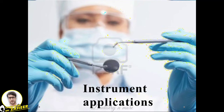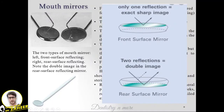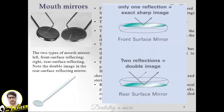Mouth mirrors: there are basically two types. The first one is the front surface reflecting and the second one is rear surface reflecting. The basic difference between these two is that the rear surface reflecting shows a double image, as you can see in the picture here. The front surface image appears to be on the surface of the mouth mirror.